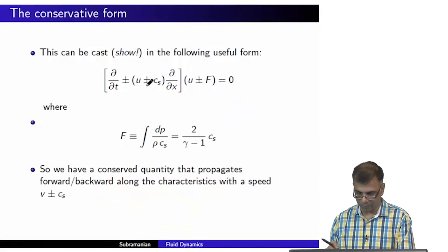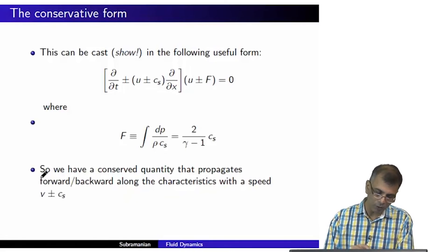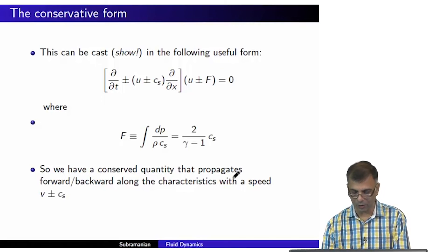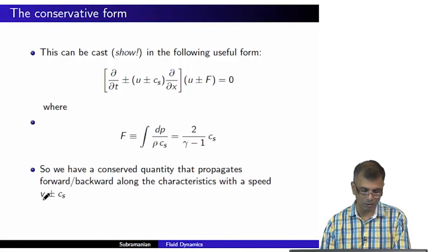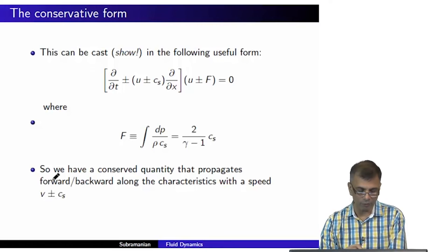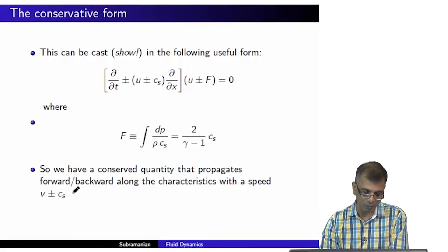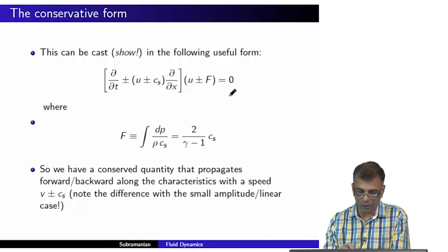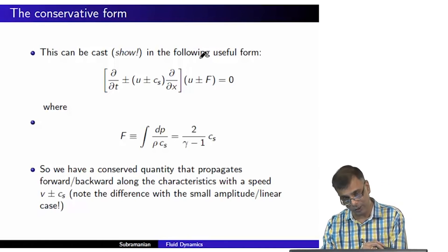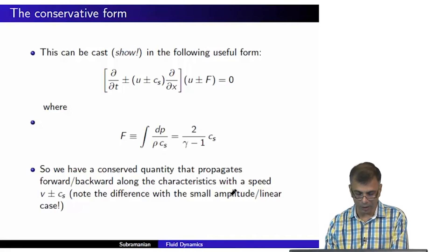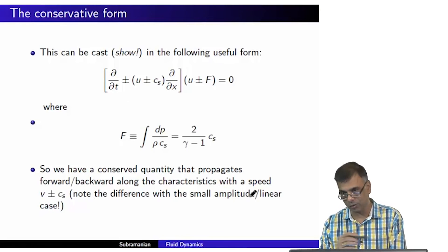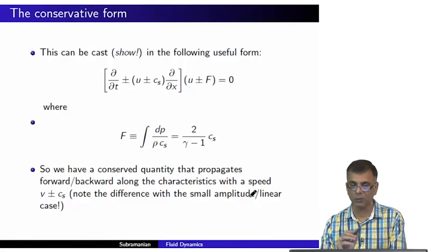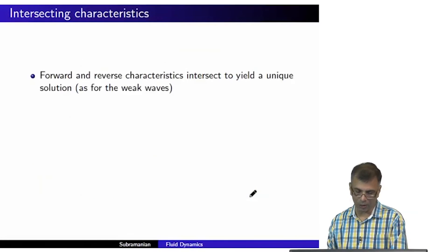We have conserved quantities propagating forward or backward along characteristics with speed u ± c_s. This is again an advection equation, analogous to the one for the linearized Riemann invariants j+ and j− discussed earlier, but now without linearization. Both are advection equations with conserved quantities; however, the conserved quantities themselves are quite different. I urge you to compare the two equations, noting both similarities and differences.